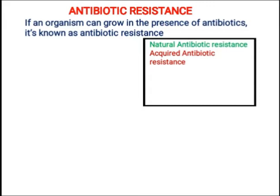تو ultimately وہ antibiotics جو cell wall inhibitors کے طور پر act کرتے ہیں — for example beta-lactam, for example penicillin — وہ effective نہیں ہوں گی against Mycoplasma کیونکہ Mycoplasma کے پاس naturally cell wall ہی نہیں ہے۔ So it is known as natural antibiotic resistance. یہ naturally ہوتی ہے اور یہ کوئی problem نہیں ہے۔